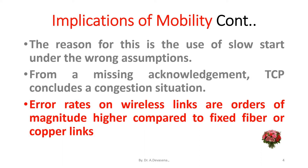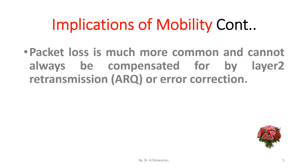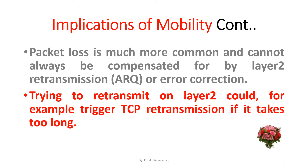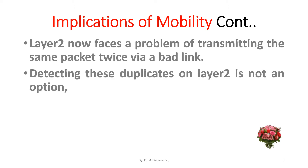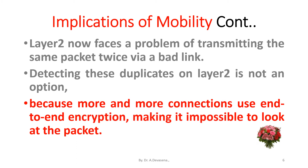Error rates on wireless links are orders of magnitude higher compared to fixed fiber or copper links. Packet loss is much more common and cannot always be compensated for by layer 2 retransmission or error correction. Trying to retransmit on layer 2 could, for example, trigger TCP retransmission if it takes too long. Layer 2 now faces the problem of transmitting the same packet twice via a bad link. Detecting these duplicates on layer 2 is not an option because more and more connections use end-to-end encryption, making it impossible to look at the packet.